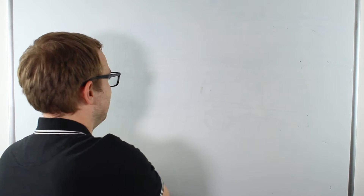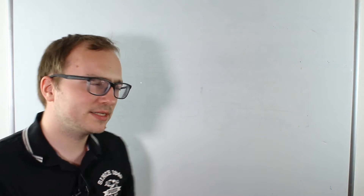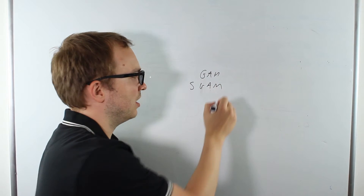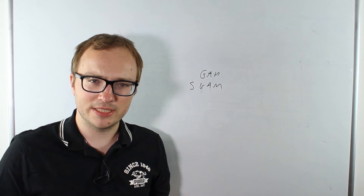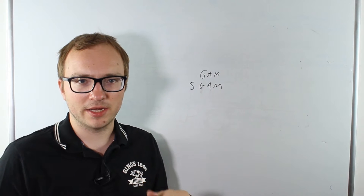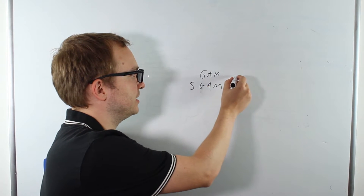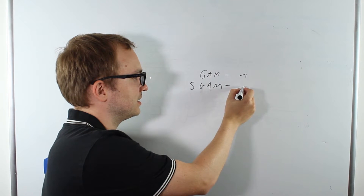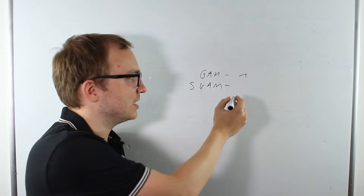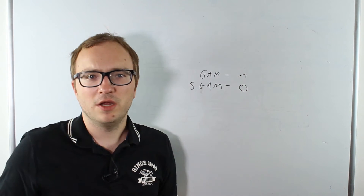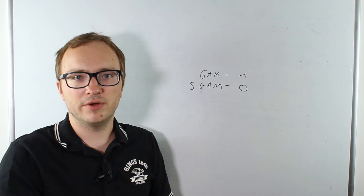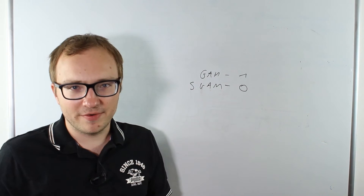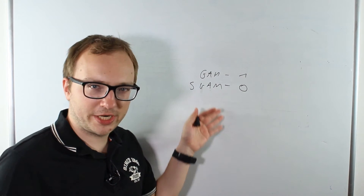If there is no free space left, SQL Server uses the GAM and SGAM pages to find a new extent that is not already allocated. We'd look for an unallocated extent or a uniform extent, allocate it, put our row in it, and then add it to the IAM structure. That's it — it's actually very straightforward.